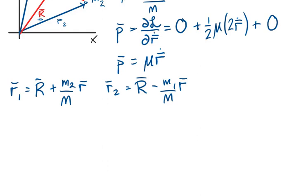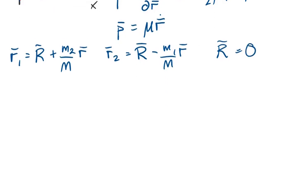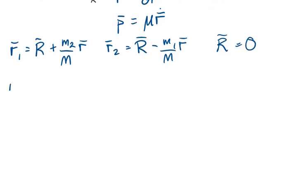In the center of mass reference frame, the position of the center of mass is zero. It's also not moving, but that doesn't matter in this. Then we have R₁ equals M₂/M times R. Therefore, the change in R₁ is M₂/M times Ṙ. Similarly, for R₂.